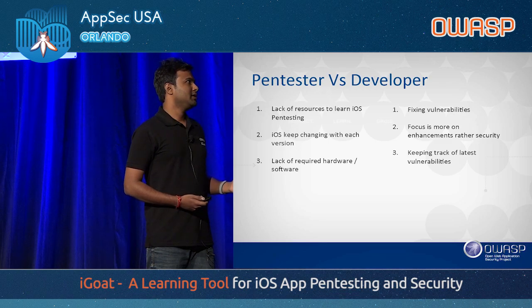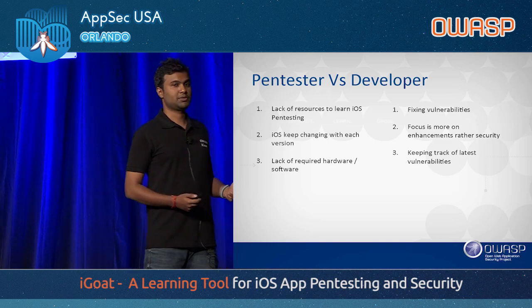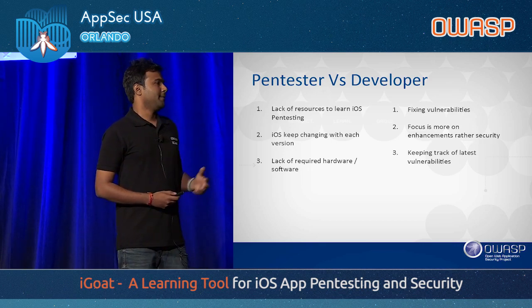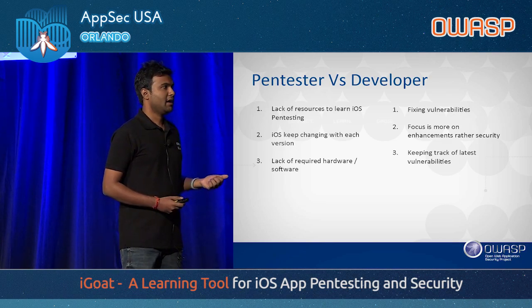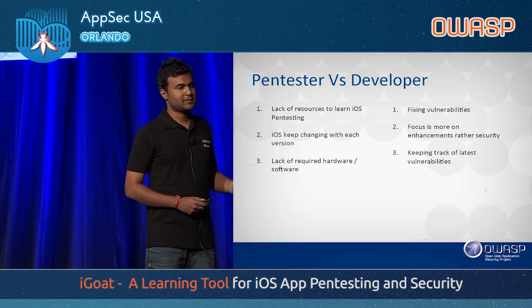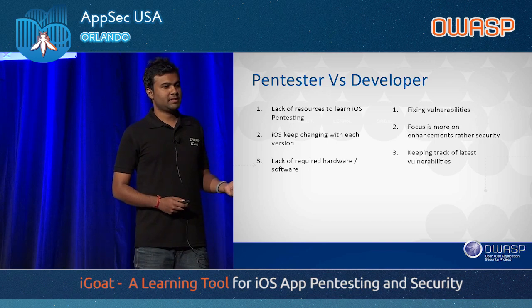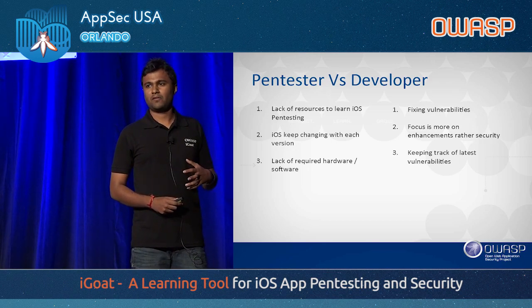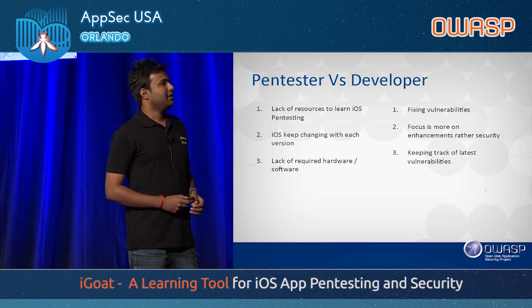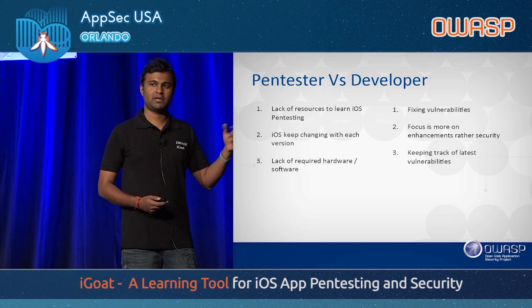Problems in pen testing: comparing to Android, there are many more challenges for iOS security — like building secure iOS products, lack of resources for iOS pen testing, iOS keeps changing with each version, there are file systems and internal file structure changes, and lack of required hardware. Unlike Android, you cannot run iOS applications on Windows; you must have a MacBook, simulator, or at least an iDevice. In development, focus is more on introducing features. Developers, when a vulnerability is reported, start looking on Stack Overflow and many other places where they don't find the exact secure code solution. It's very difficult for developers to keep track of the latest attacks.